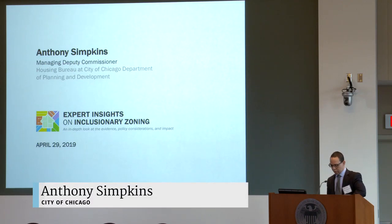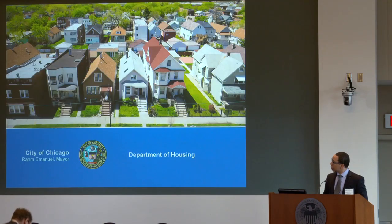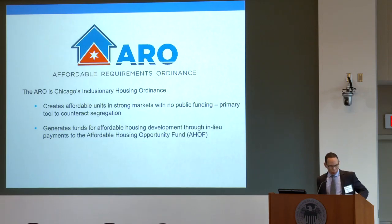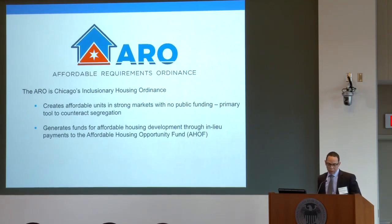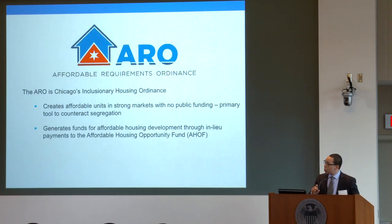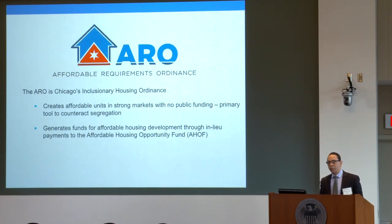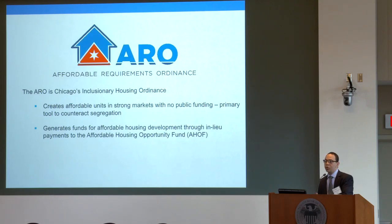I work for the City of Chicago's Department of Housing. So let's jump right into it so I can talk about what it's like to actually administer an inclusionary zoning program. Our ARO — Affordable Requirements Ordinance — really started in about 2003. We did some major overhauls of that ordinance in 2007, and then rather recently, a huge overhaul in 2015. And we are now looking at probably doing yet another overhaul.